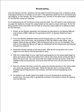Step 18: Power up the Spooky generator and software as described in the Spooky manual and connect a BNC cable from the generator's OUT1 to the Spooky Radionics input socket. From the Spooky database select all the frequencies you wish to use. For the waveform, use a sine wave and set amplitude to 20V. No need to alter offset, duty, or phase — these all stay as default. Set the frequencies to run immediately. The LED on the radionics device will light up indicating the frequencies are passing through the machine. Place the witness sample on the input plate. With all tuning dials set to zero, begin from the first dial on the left and start to tune.